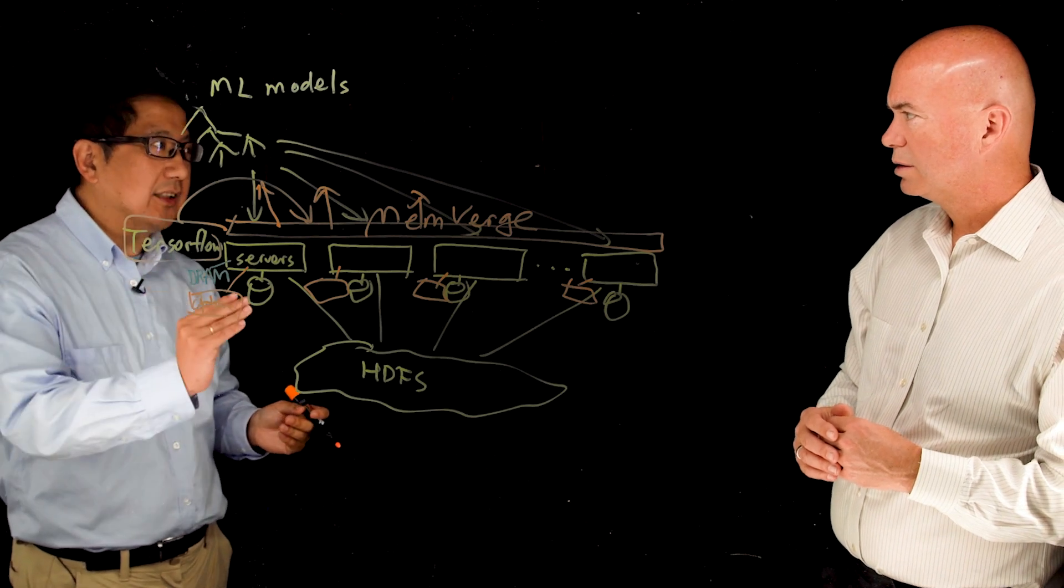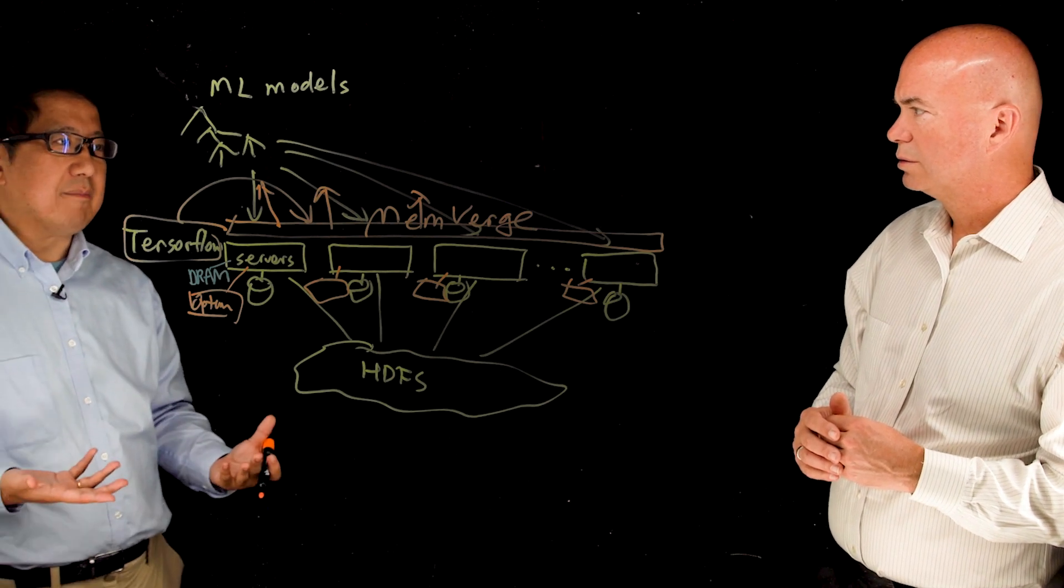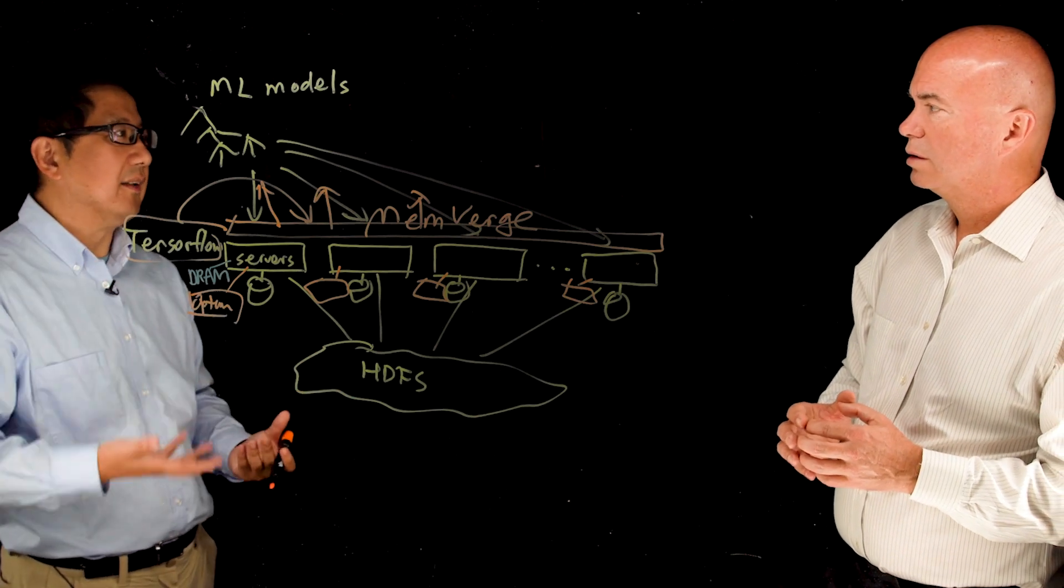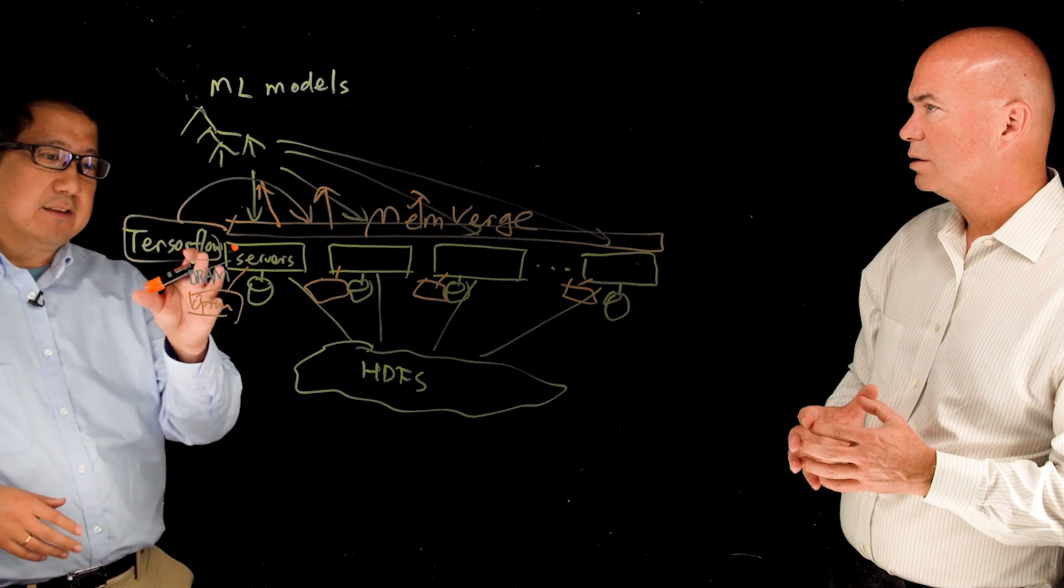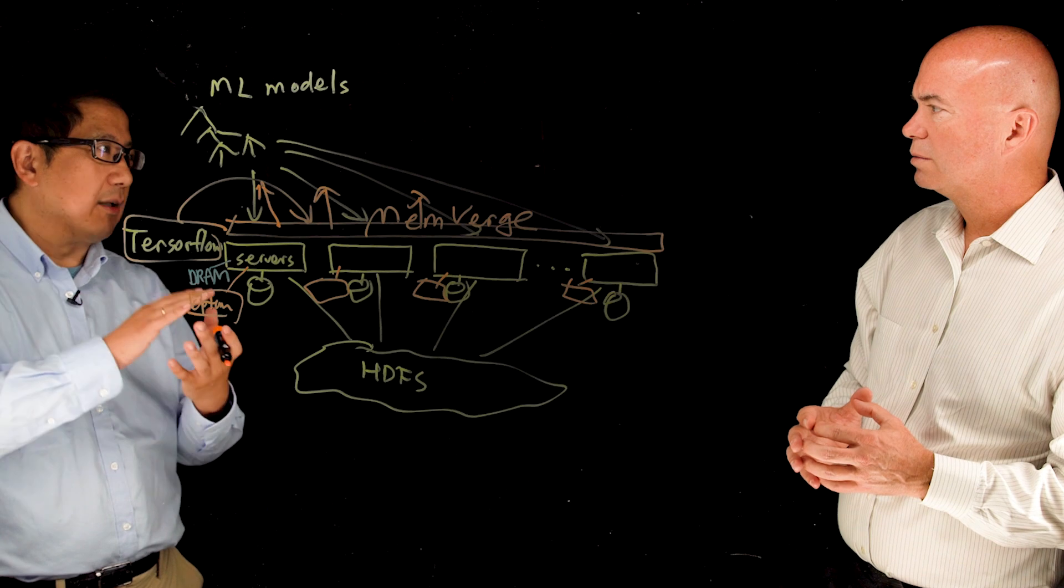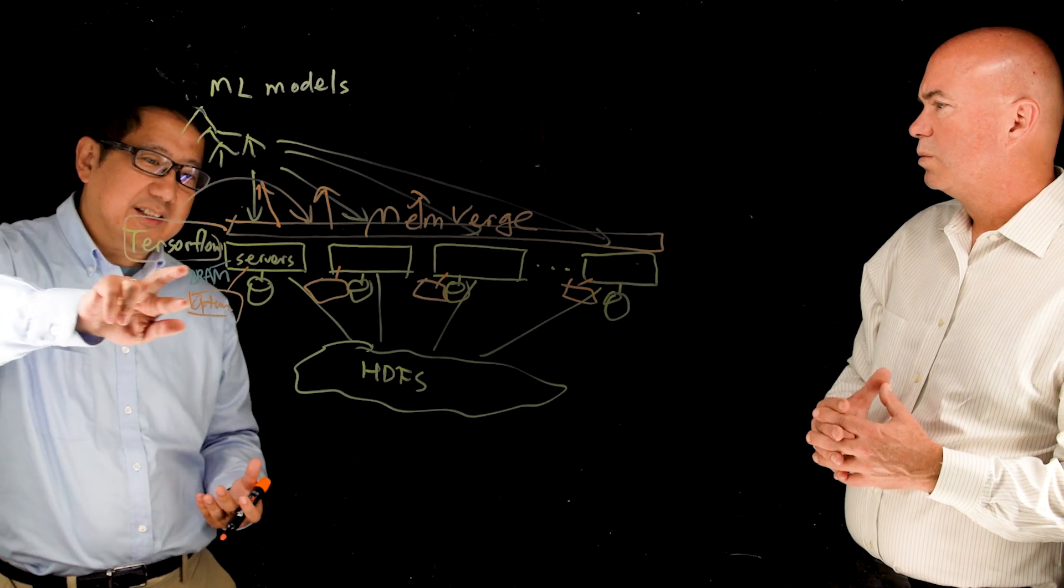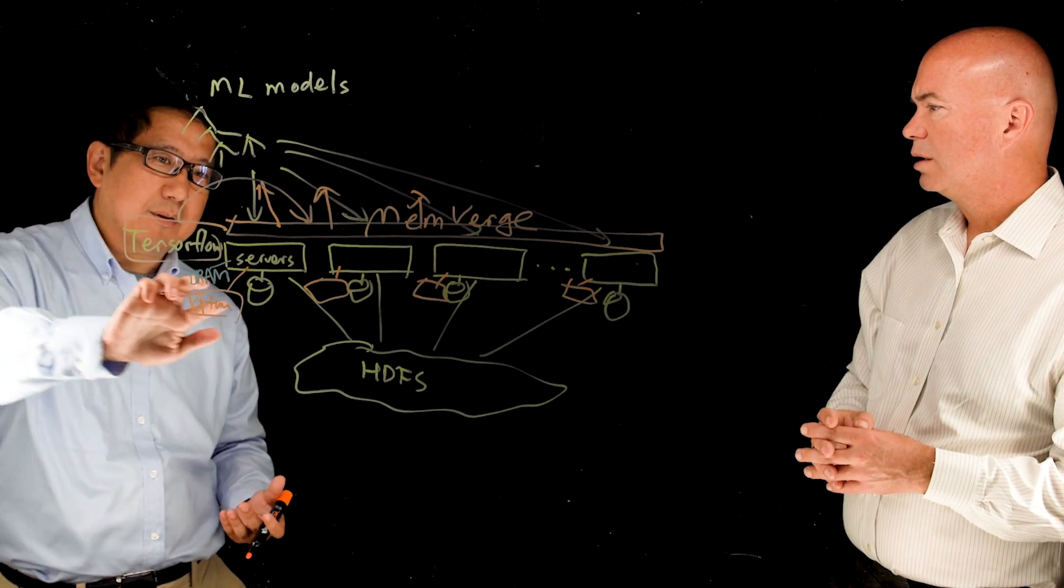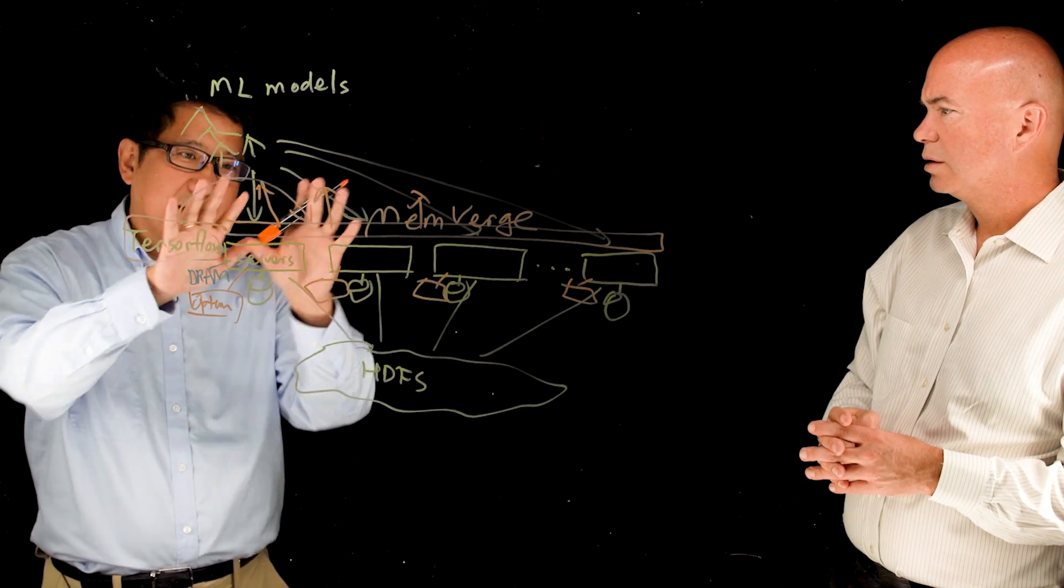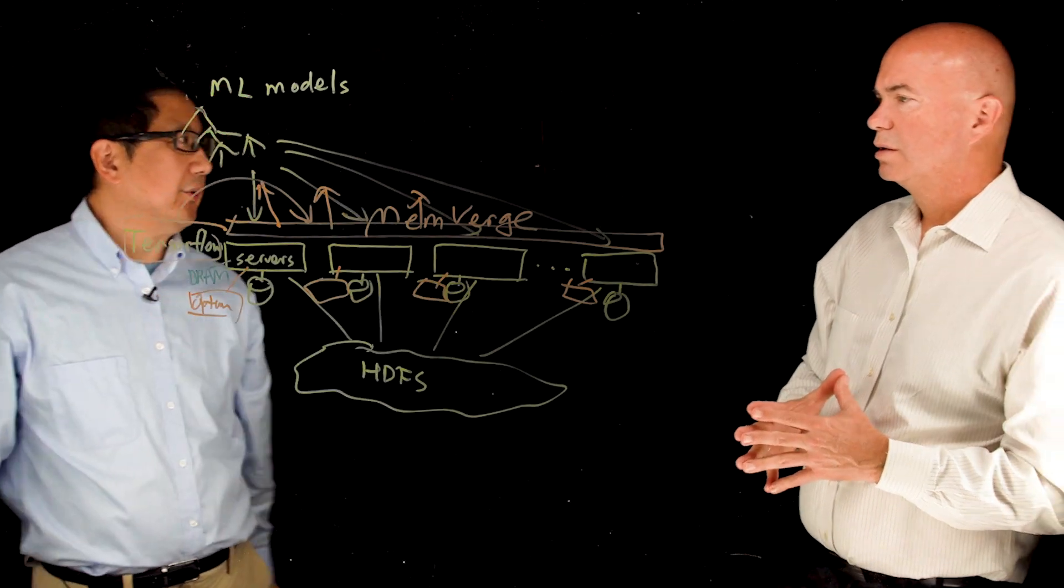And then the SSD is there to enhance the storage services to make the capacity even larger and the economics even better for your storage services. So essentially we have three tiers of physical media where DRAM and Optane enables the memory service and Optane and the SSD enables the storage service. And all of these are provided in the software construct so they are composable and they are dynamically reconfigurable to support the applications.